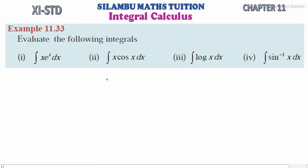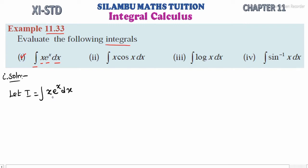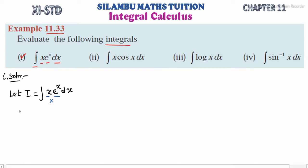Hi students, this is Silamba Institution, 11th standard, Example 11.33: evaluate the following integrals. Sub-division 1: integrating x into e power x dx. Observe these two — x and e power x are in a product form, but we cannot directly multiply here. So in this kind of situation, we use the method of integration by parts.